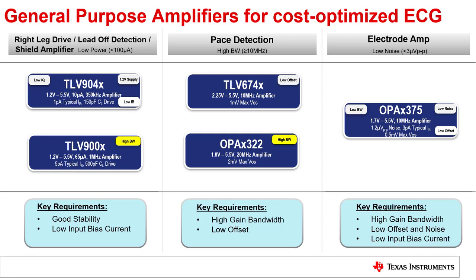For lead-off detection, the low input bias current of these devices plays a critical role in making sure the amplifiers do not add errors. Pacemaker signals are usually higher frequency and higher amplitude compared to ECG signals. Hence a slightly higher offset with high gain bandwidth is deemed acceptable for low-cost signal processing. The TLV674X, which presents 10 megahertz gain bandwidth with just 1 millivolt of max offset, could be a great fit. For even higher bandwidth requirements, the OPAX322 offers 20 megahertz gain bandwidth. Processing the ECG signal requires lower noise especially at lower frequencies, along with lower offset and input bias current — here the OPAX375 with 1.2 microvolts peak-to-peak noise in the 0.1 to 10 Hz range fits well into a cost-optimized signal chain.